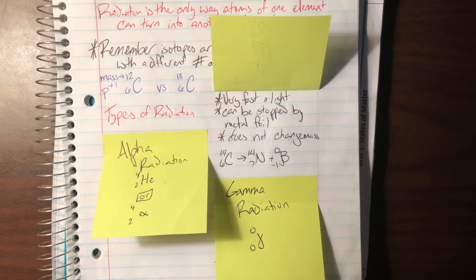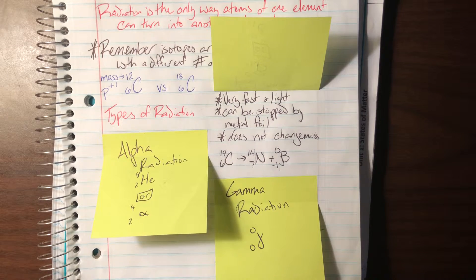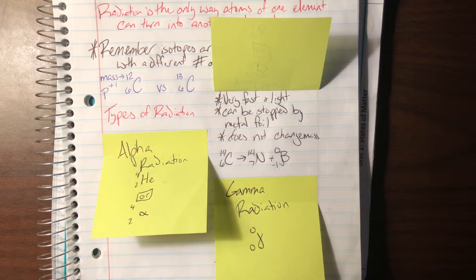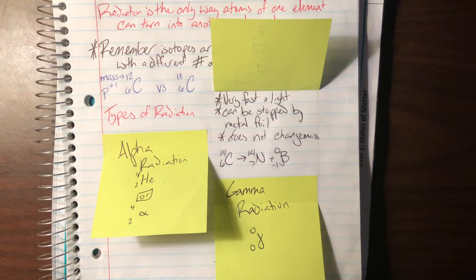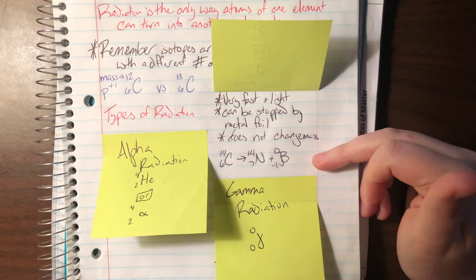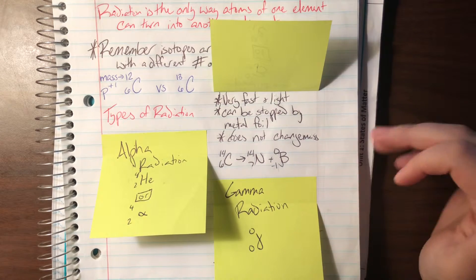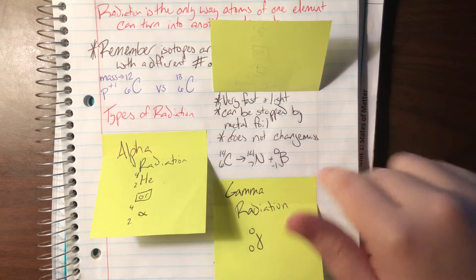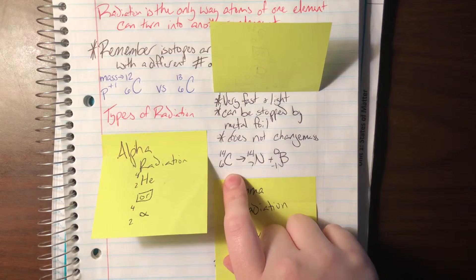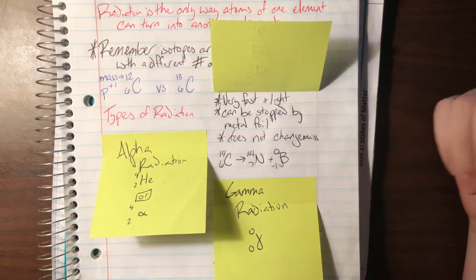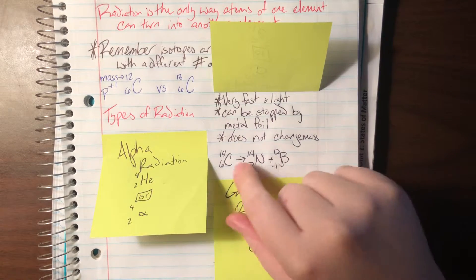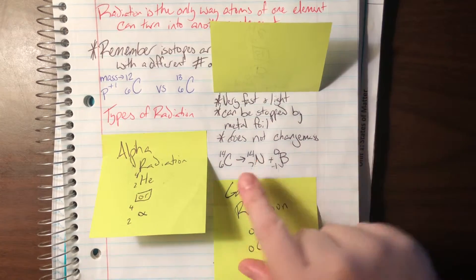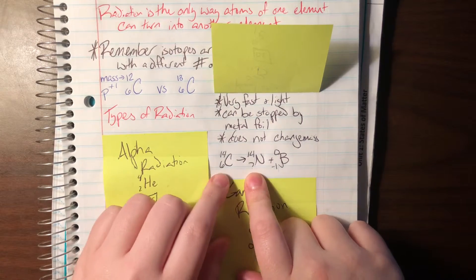Beta radiation is much lighter, which means it can go very fast, and it's a little bit more difficult to stop. You can stop it with a very thin sheet of foil, aluminum foil, tin foil, any sort of metal foil will go ahead and stop it. But the thing again is we are ejecting an electron type thing, which remember electrons have nearly no mass. And instead of having that neutron, it turns into a proton. So my proton count went from six to seven because I turned one of my neutrons into a proton.